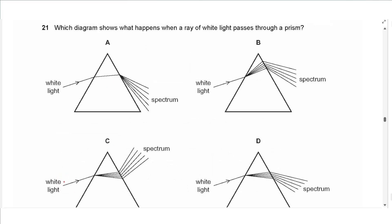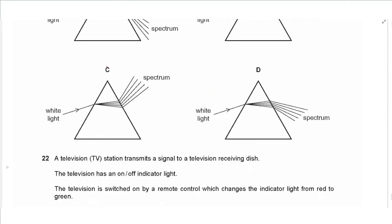Question 21: white light passes through a prism. Choice A is wrong because dispersion happens at both surfaces. Choice B is wrong because the ray bends away from the normal entering the glass, implying it speeds up — but it should slow down. Choice C is wrong because after exiting the glass the ray should bend away from the normal pointing downwards. The answer is D.